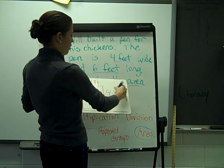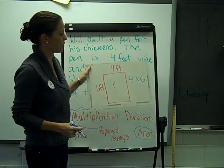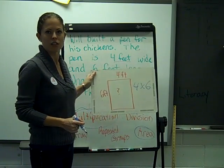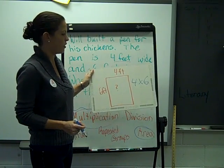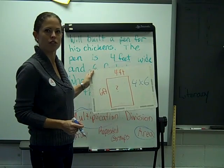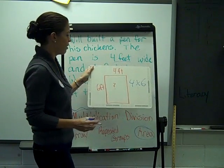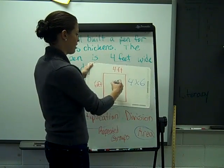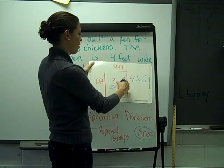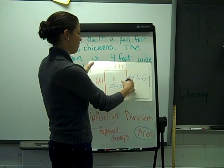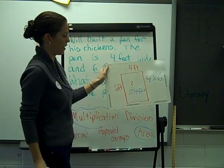So 4 times 6. If you're not sure what 4 times 6 is, you can draw a picture, you can count by 4s, you can count by 6s. 4 times 6 is 24 feet squared for our area.